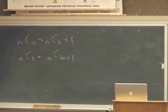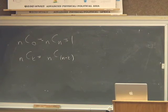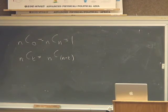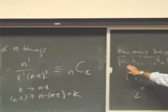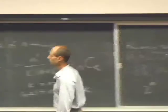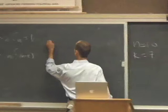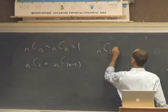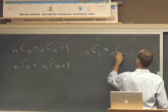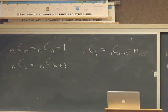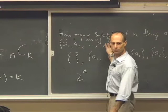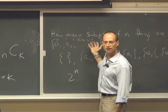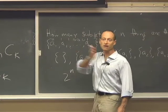Heuristically, why does it make sense for n choose k to be equal to n choose n minus k? Picking one element to be in our subset is the same as picking n minus 1 elements not to be in our subset. You can think of specifying a set or specifying the complement of the set.